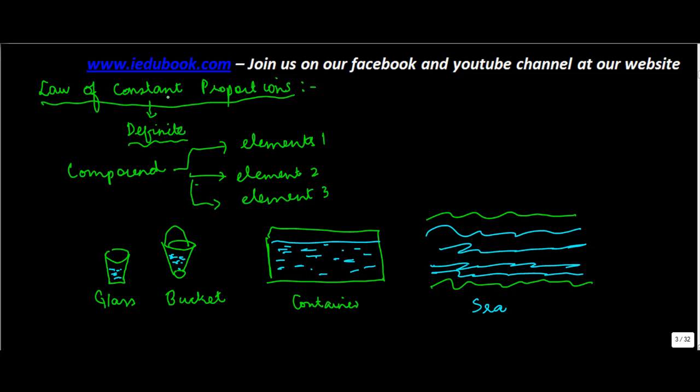Now what does this law of constant proportions say? Proportions, I believe you must be understanding what the meaning of proportions is. It's the relative quantity of one to the other. So if there are suppose two items x and y, what is a proportion? Proportion means basically x divided by y. Whatever is the answer you say that the proportion of x and y is let's say it is 3 is to 2. So this is what is proportion. You must have done a lot about this in your mathematics.